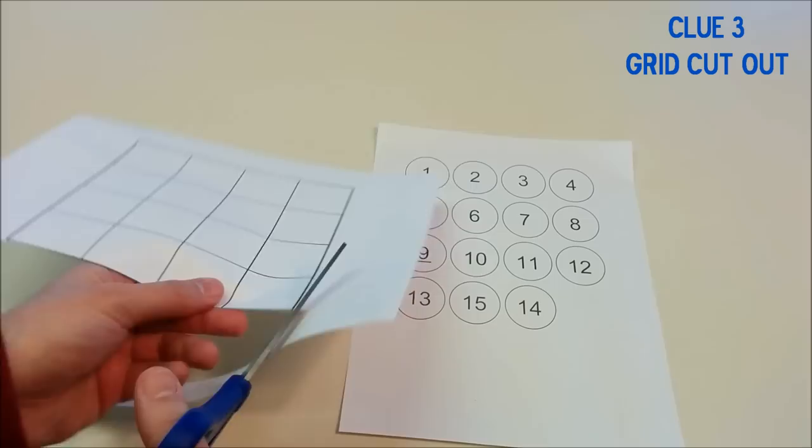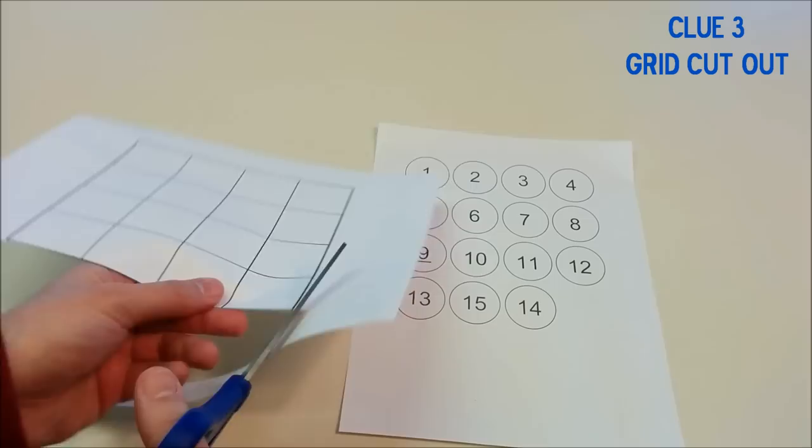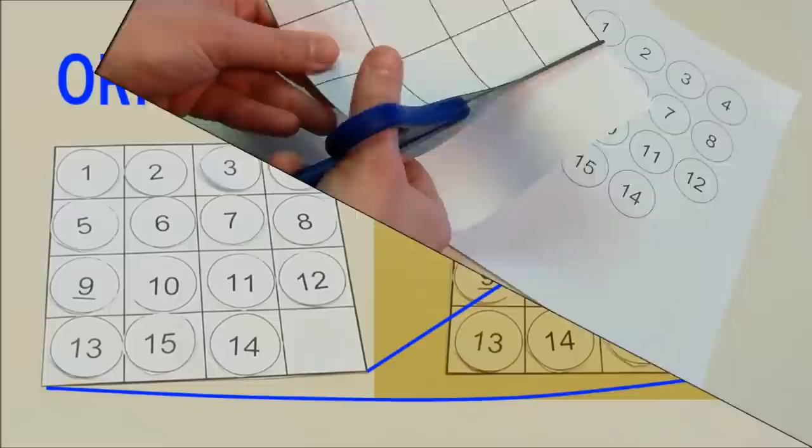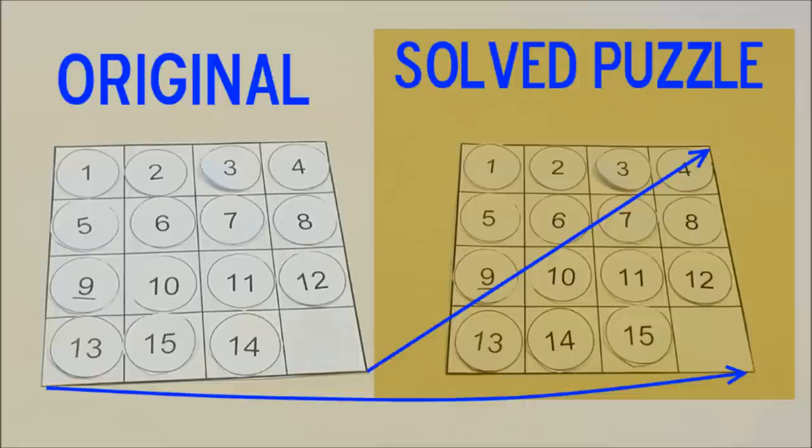The third clue is that I cut out the 4x4 grid, which seemingly served no purpose at all. The reason was if you compared the original configuration to the solved puzzle, and you looked very closely, you could see that the grid was actually rotated in the solved puzzle from where it was originally.